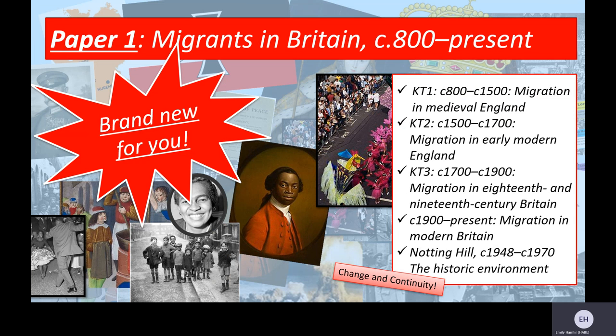So to give you a quick deconstruction of what we'll be looking at: this is our Paper 1. Paper 1 is Migrants in Britain from 800 until the present, and this is a brand new topic for you. You'll be the first ones to go through this module as it's new to the Edexcel specification. We've chosen to teach it at Harris Academy Beckham because we think it is absolutely fantastic. It starts even before the Norman conquest, and we're looking at reasons for migration and patterns of settlement, including the Vikings, the Normans, Jews and other European traders and craftsmen, and the context of European society in the 800s.